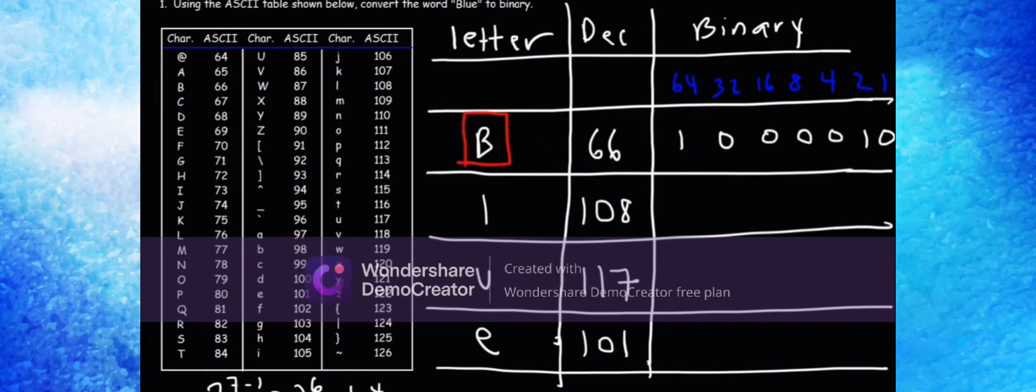The letter B corresponds to the 7-bit binary code we see here. Now let's move on to the next one. The letter L has a decimal value of 108. To get 108, we need 64 and 32, so that's 96. If we add 16 to 96, that's 112, which is too much. Since we don't need 16, we put 0. We do need 8, so 96 plus 8 equals 104. We only need 4 more to get 108, so we put 1 for the 4 and 0 for the 2 and 1.